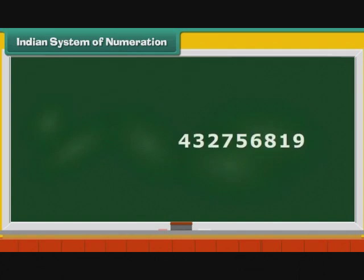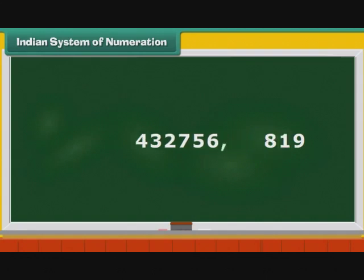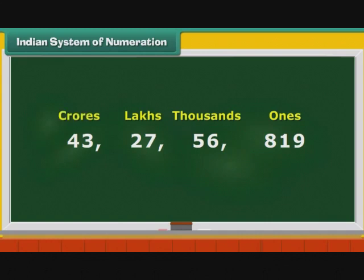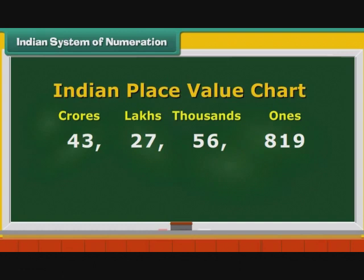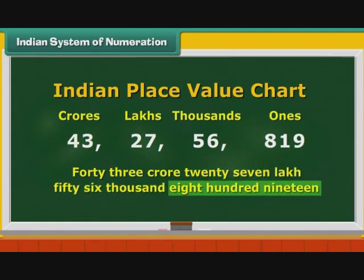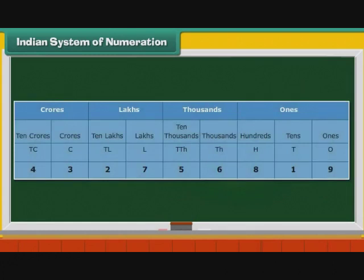Consider the number 432756819. We count three digits from the right and place a comma before eight. Then we count two more digits and place a comma before five. We count two more digits and place a comma before two. Thus, we have four groups: ones, thousands, lakhs, and crores. This is the Indian place value chart. Now let us read the number from left. It is 43 crore 27 lakh 56,819.